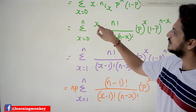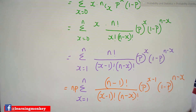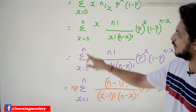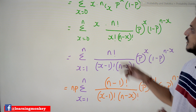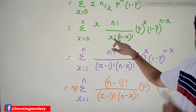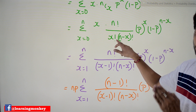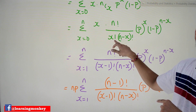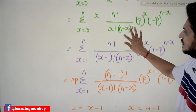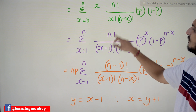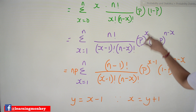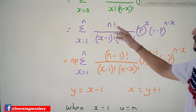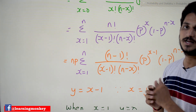When x=0, this entire term is 0, so there is no contribution from the first term. That is why we take the sum from x=1 to n. Also, we rewrite x! as x · (x−1)!, so the x in the numerator cancels with x in the denominator, leaving (n! / ((x−1)! · (n−x)!)) · p^x · (1−p)^(n−x).